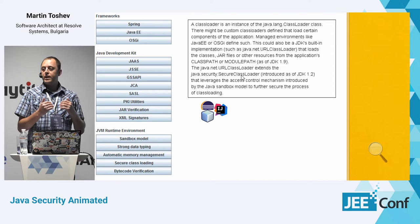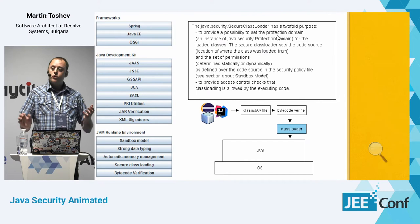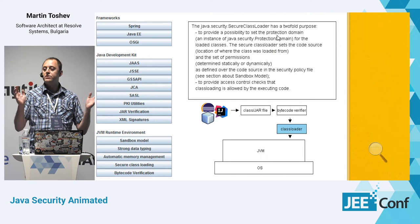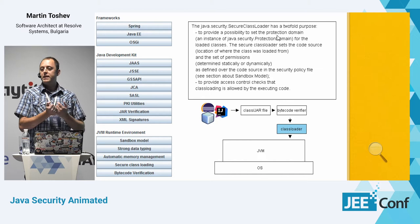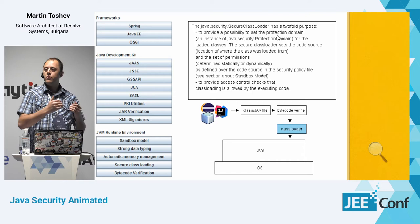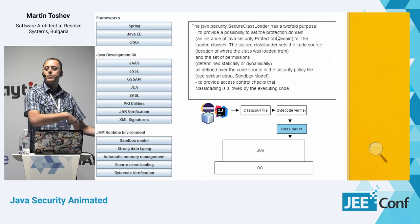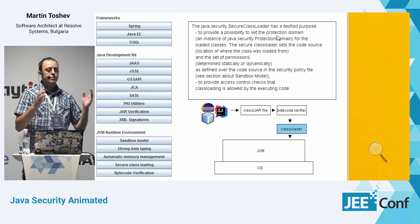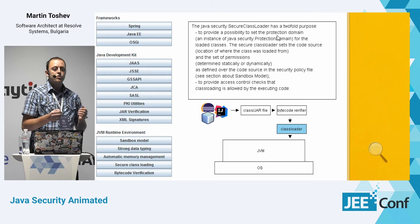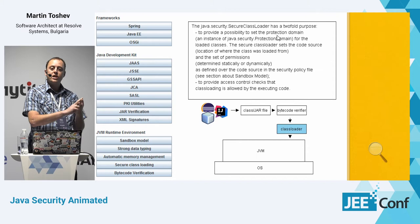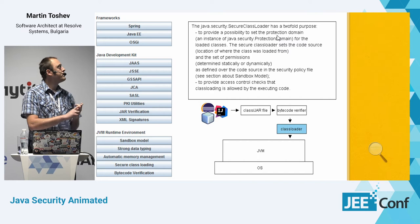The SecureClassLoader is an additional layer of security added to the class loading mechanism and serves two purposes. First, it provides the capability to set the protection domain of each class you load. The protection domain is the set of permissions defined for that class. There is a security policy file in the JDK installation where you can set different permissions — for example, all classes loaded from a particular jar file have permission to open a socket connection to a specific website or delete files from the filesystem. You can get the protection domain for each class by calling getProtectionDomain().